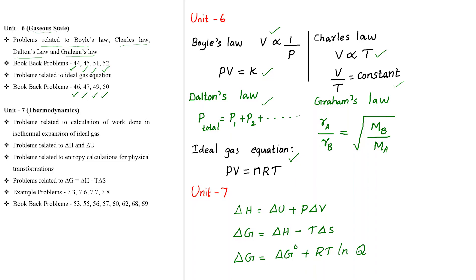Next, Unit 7: Thermodynamics. This unit has problems related to work done in isothermal expansion of an ideal gas, problems related to ΔH and ΔU relation, and the formula ΔG = ΔH − TΔS, which is related to important problems.